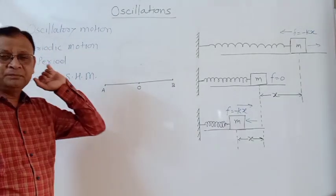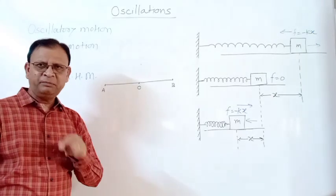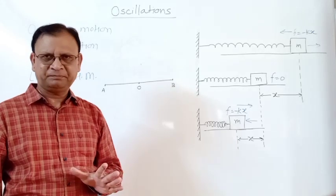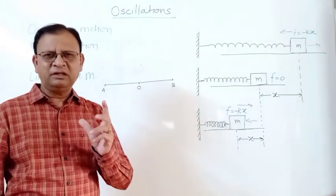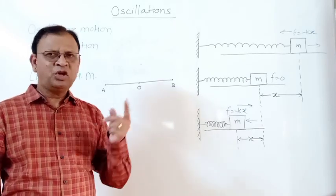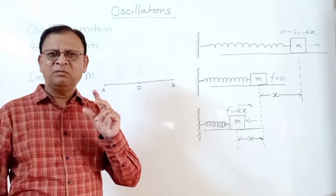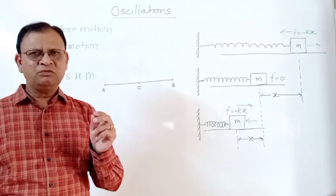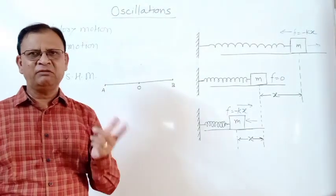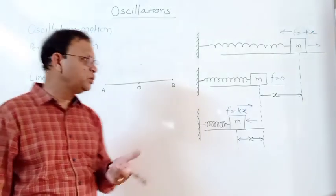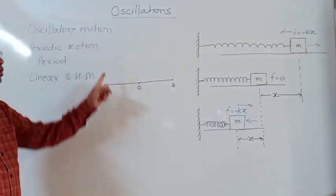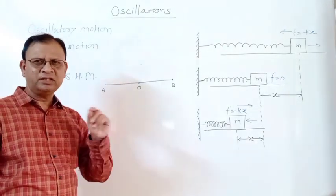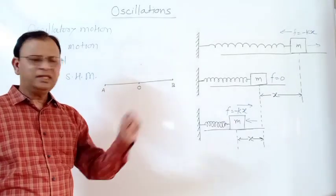Periodic motion is motion which repeats itself after equal intervals of time. Examples include the motion of the Earth around itself, the motion of hands of a clock, and the motion of the Earth around the Sun. Oscillatory motion is also a periodic motion — for example, the motion of a pendulum in a clock.